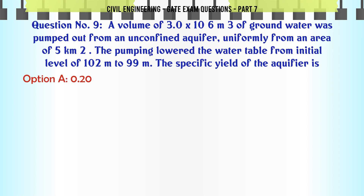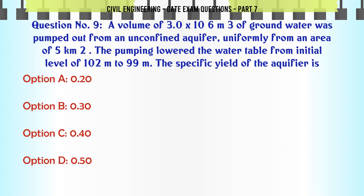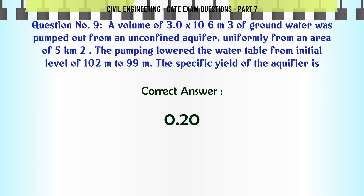A volume of 3.0 × 10^6 M3 of ground water was pumped out from an unconfined aquifer uniformly from an area of 5 km2. The pumping lowered the water table from an initial level of 102 m to 99 m. The specific yield of the aquifer is: A) 0.20, B) 0.30, C) 0.40, D) 0.50. The correct answer is 0.20.